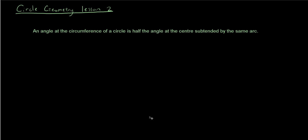Today, the concept we're talking about is an angle at the circumference of a circle is half the angle at the center subtended by the same arc.